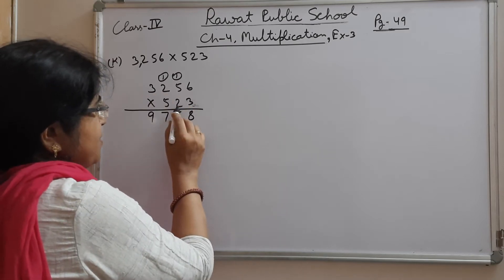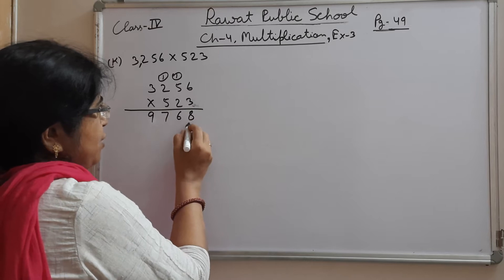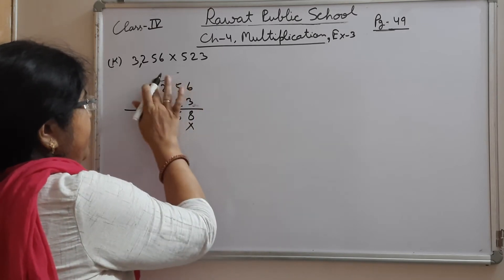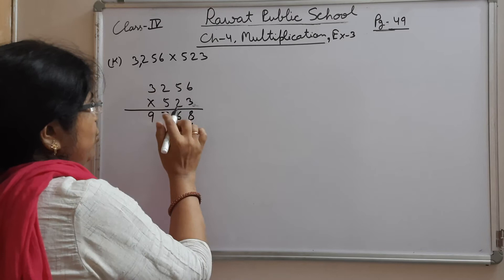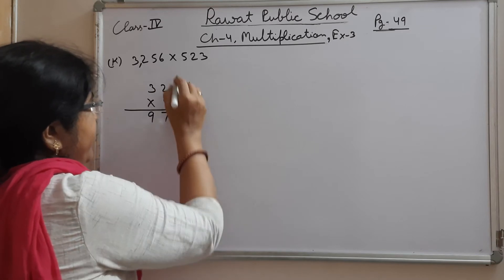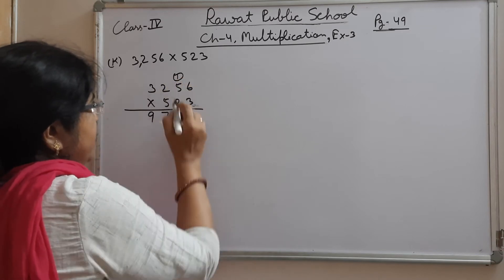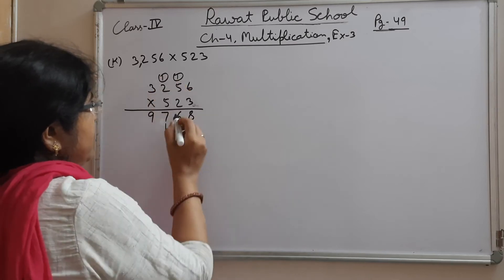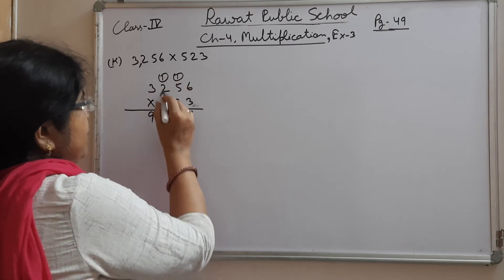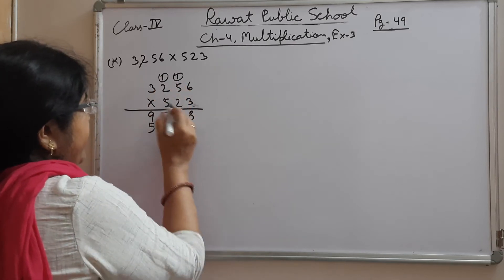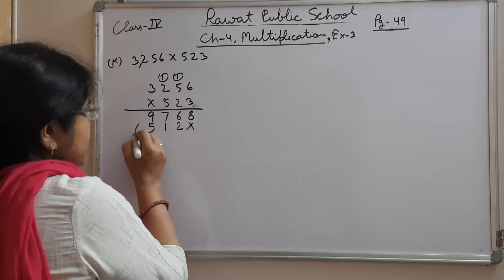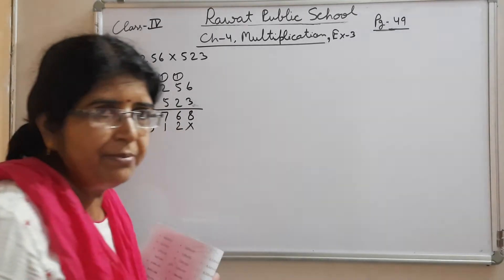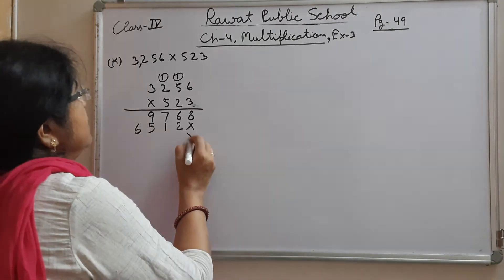Once the ones place step is done, when you do the tens place you will cross the ones place. Now for tens place: 2×6=12, 2; 1 carry over; 2×5=10, plus 1=11, 1 carry over; 2×2=4, plus 1=5; and 2×3=6.